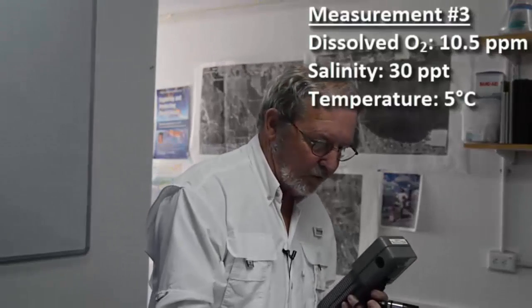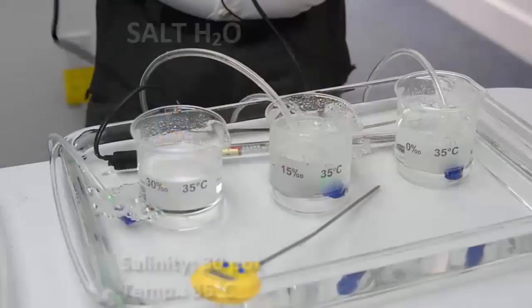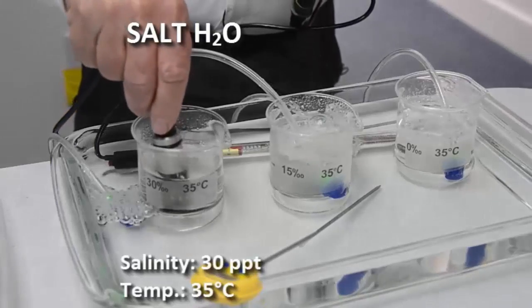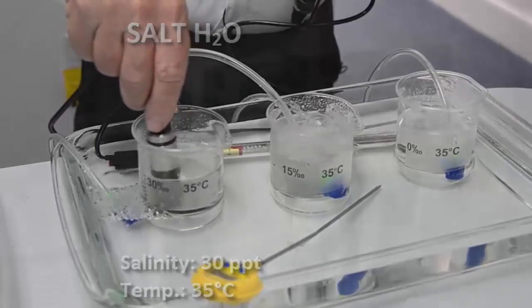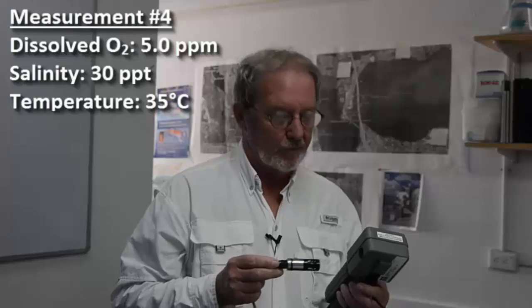Now we're going to look at salt water 30 parts per thousand in a hot water bath of 35 degrees centigrade. 5.0 parts per million dissolved oxygen in seawater at 35 degrees centigrade.